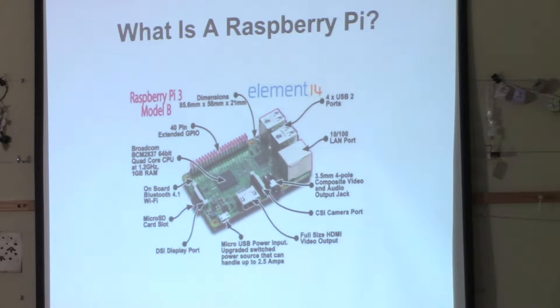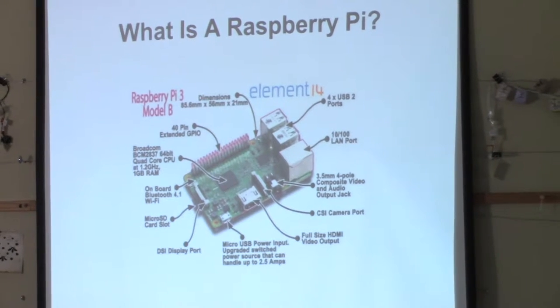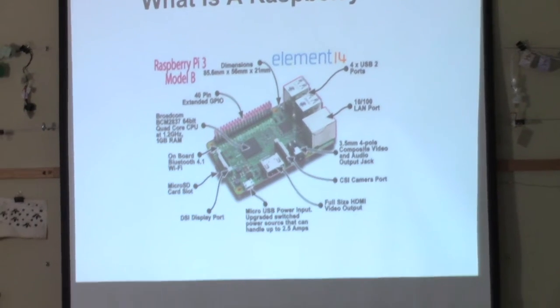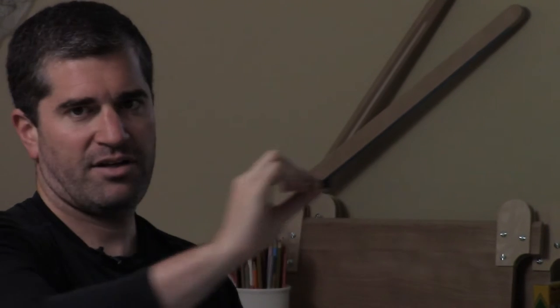The brain of the Pi — and its non-volatile memory storage — is this little micro SD card. It's the same card you'd use in a camera to store pictures. This really is the hard drive of the Raspberry Pi.